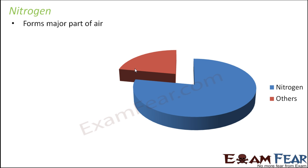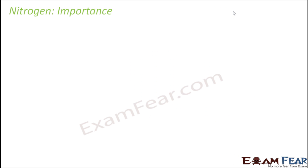Nitrogen makes almost four-fifths of the air. If you divide a biscuit into five equal pieces, four of those pieces would be nitrogen, and just one piece would be for oxygen, carbon dioxide, and other gases.